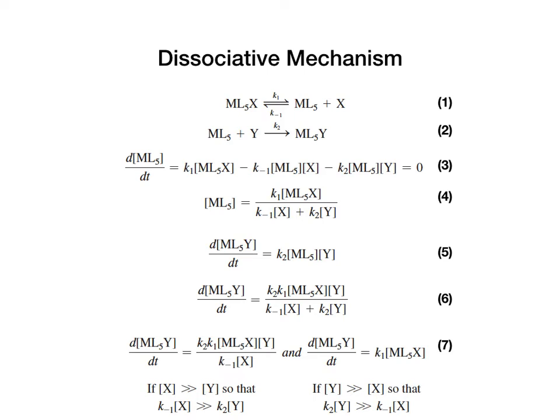Once you have ML5 from equation four, you can readily write a rate equation for the formation of ML5Y. The rate of formation for ML5Y equals K2 multiplied by [ML5] multiplied by [Y]. Substituting the expression for ML5 from equation four gives equation six.